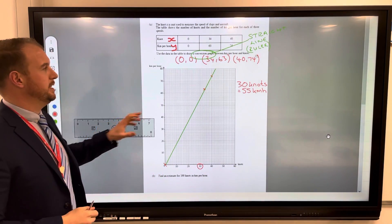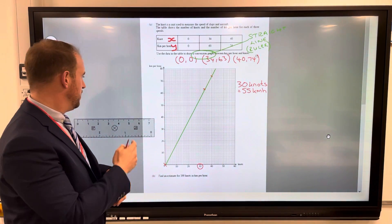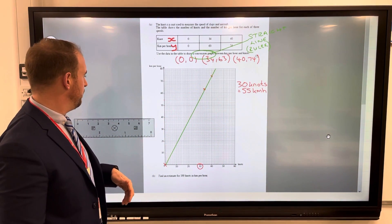And then use that point to work out that that is 55. So 55 kilometers per hour. So I have taken data away from that.